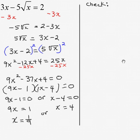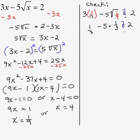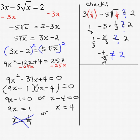Let's check x equals one ninth. Replace x with one ninth: 3 times one ninth is one third, and the square root of one ninth is one third. So 5 times one third is five thirds. One third minus five thirds is negative four thirds. Negative four thirds is not equal to 2, so instead of a bonus answer we've got a bogus answer. We throw out one ninth — it does not satisfy the original equation. It is an extraneous root.